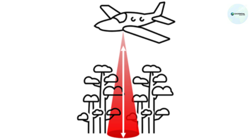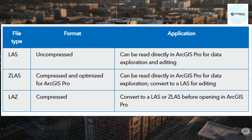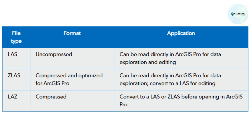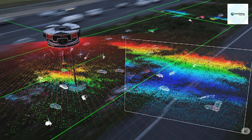LiDAR Data Formats: LiDAR point cloud data is primarily stored in a binary format named LAS. The LAS format specification is developed and maintained by the American Society for Photogrammetry and Remote Sensing, ASPRS. LAS files contain a header with metadata pertaining to the LiDAR survey, as well as information on each LiDAR point, such as its location (X, Y, Z values), the number of returns, and the return number.